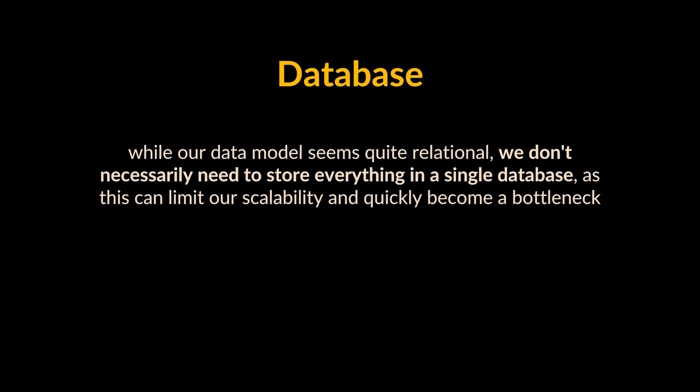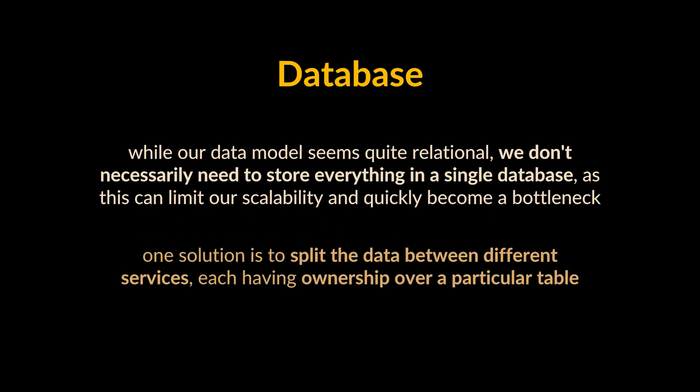After laying down the data model, we need to figure out what kind of database to use. While our data model seems quite relational, we don't necessarily need to store everything in a single database, as this can limit our scalability and quickly become a bottleneck. One solution is to split the data between different services, each having ownership over a particular table. This allows us to use PostgreSQL to store the users and Cassandra to store the videos, for example.